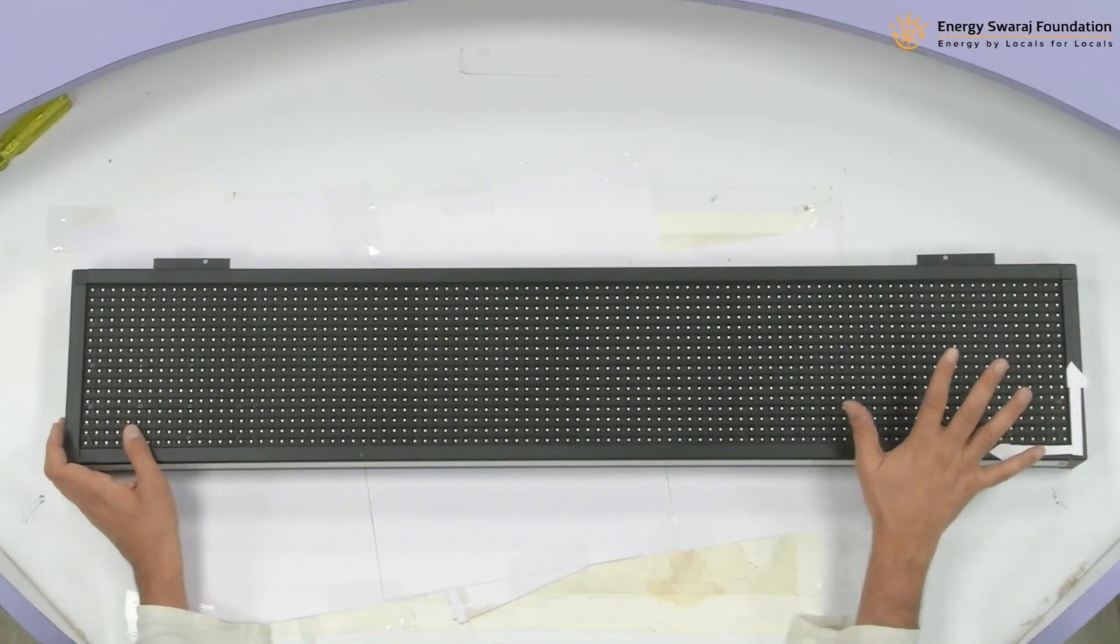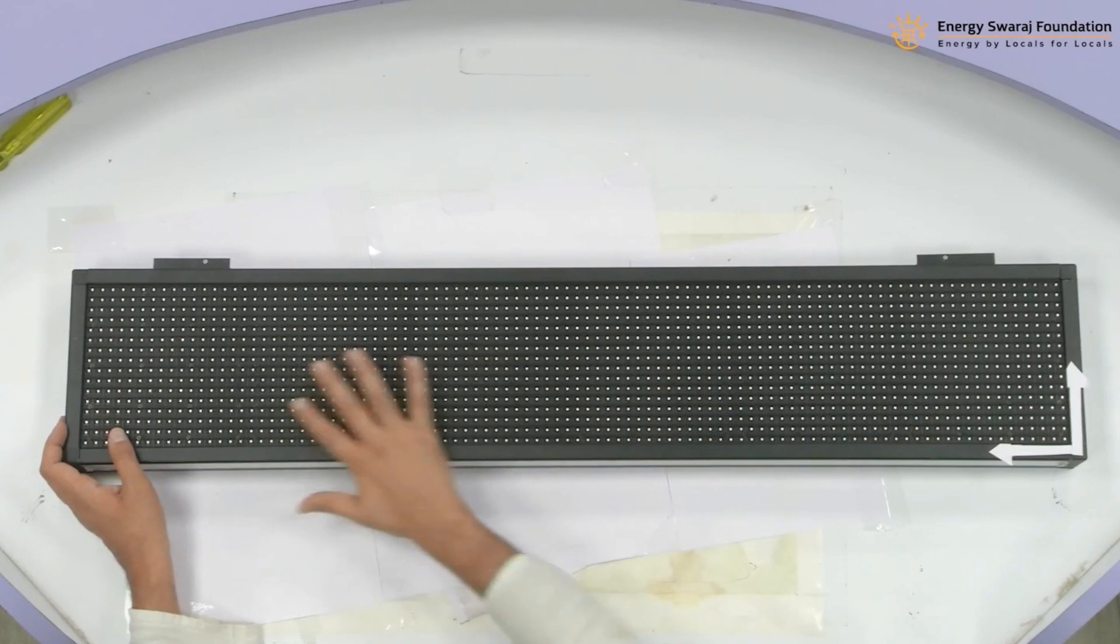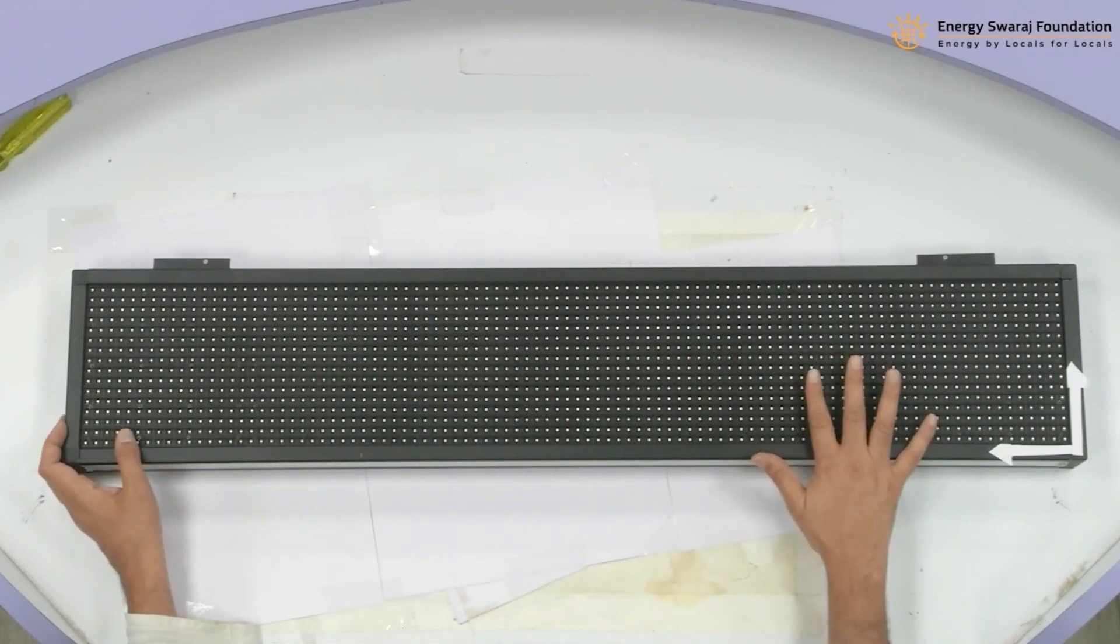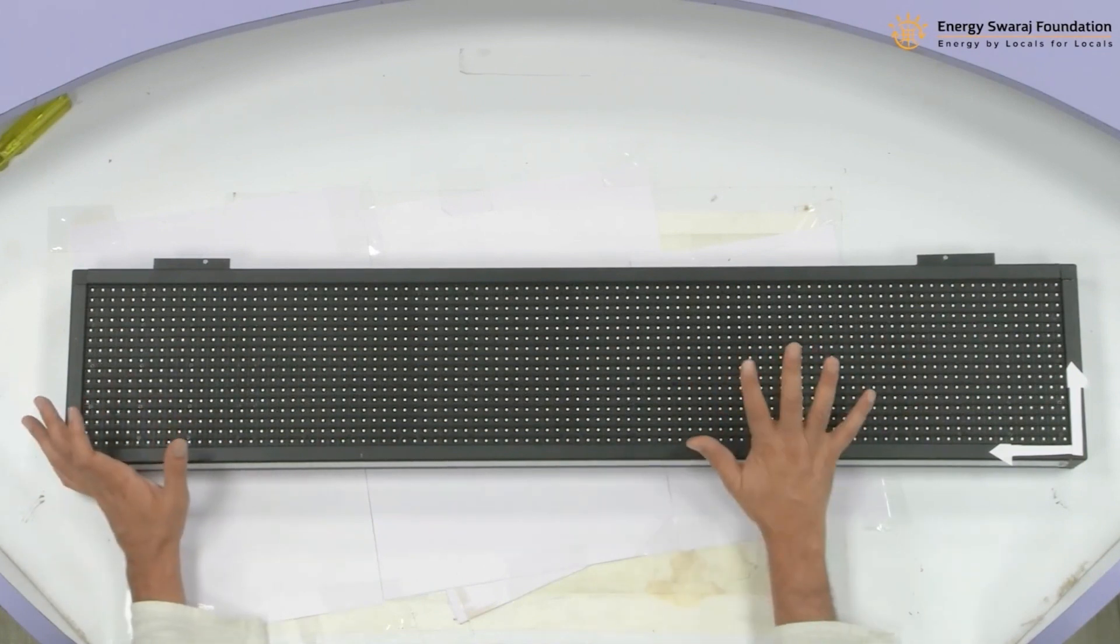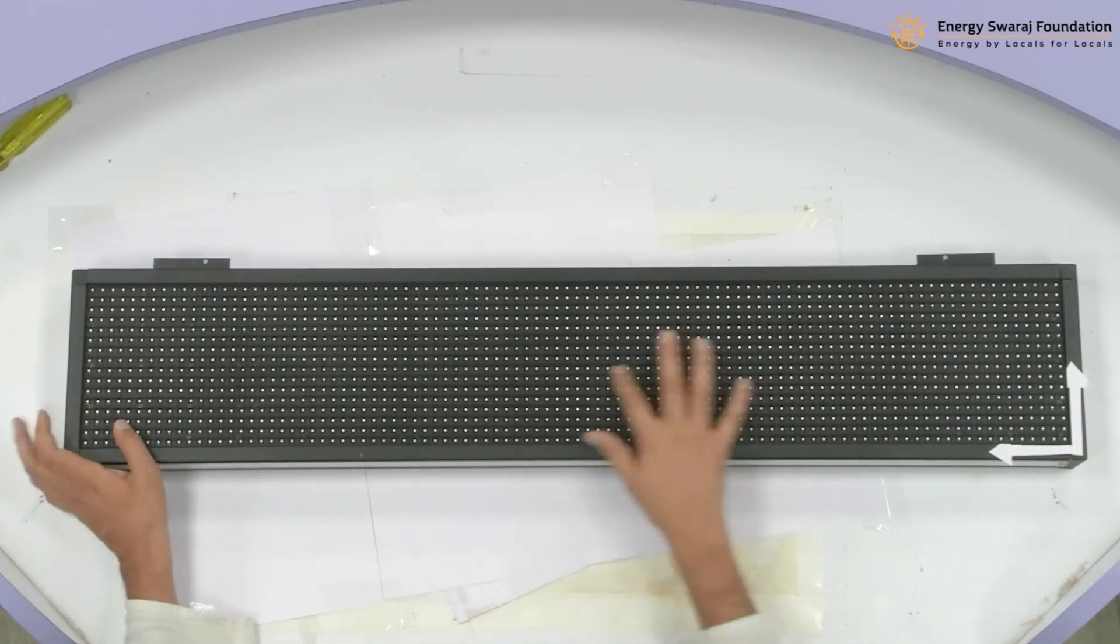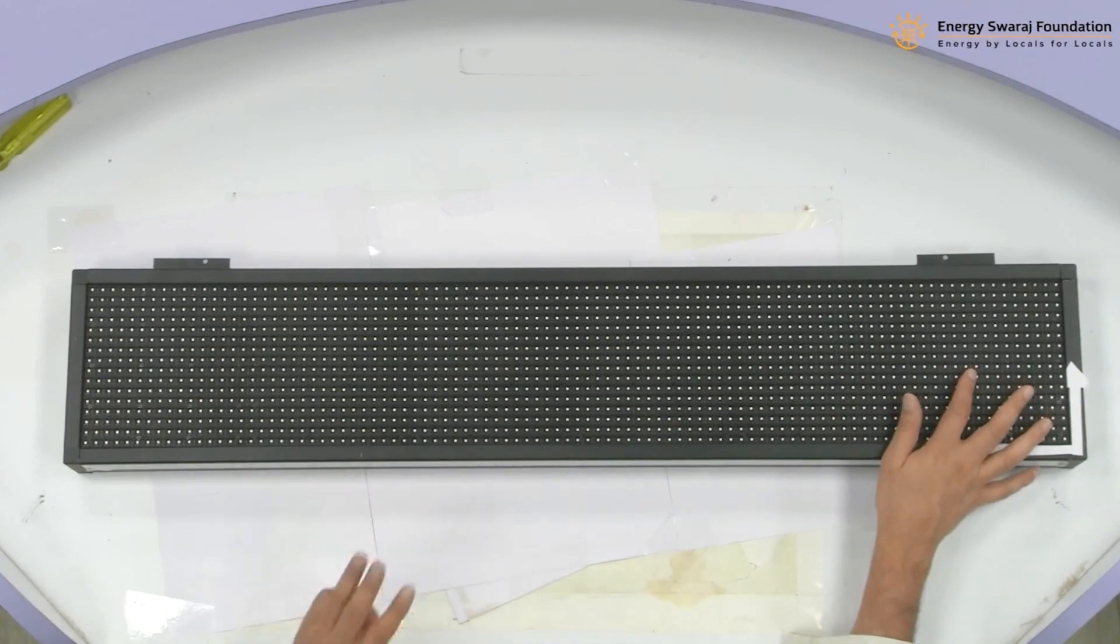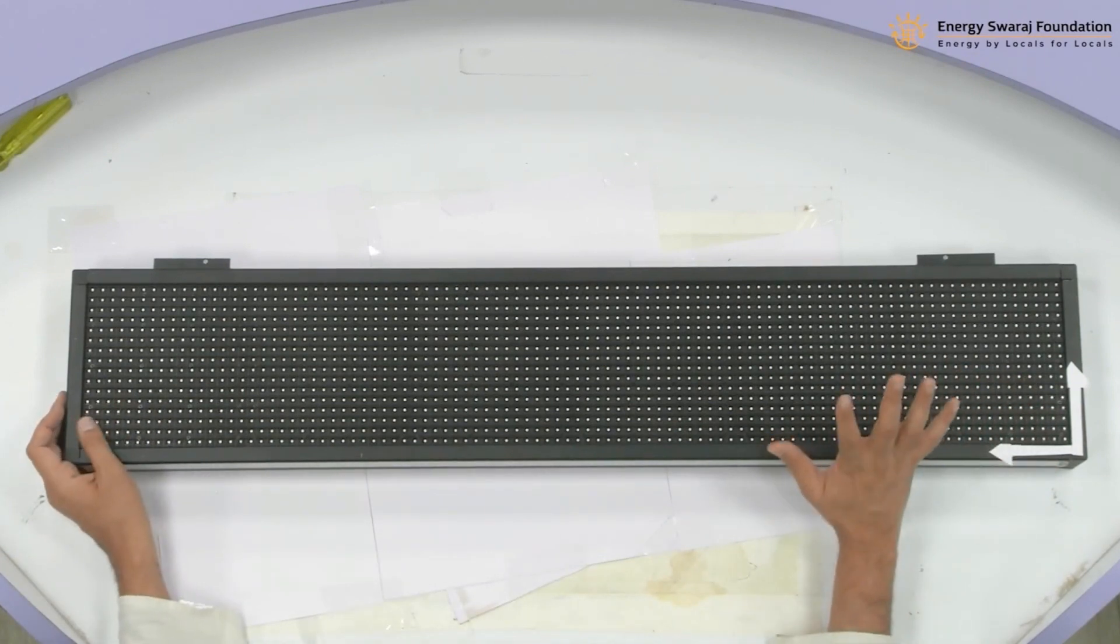All right, so this is how the front screen of your climate clock is going to look like. And you see how beautifully they are arranged and they are so perfect in size that you don't have to really worry about anything. Now you don't even see that there are three of them, but actually there are three P10 LED display modules.